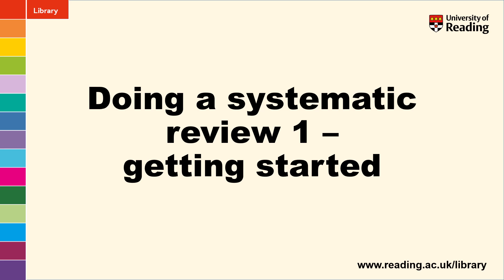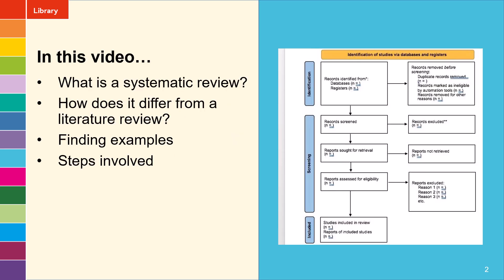Hello, welcome to the first in a series of four videos on doing a systematic review. These videos are aimed at students — undergraduates and masters students — who may be asked to do this type of review for their project. In this first video we'll be looking at what is a systematic review and how does it differ from a literature review. We will look at finding some examples and also the steps involved in doing a systematic review.